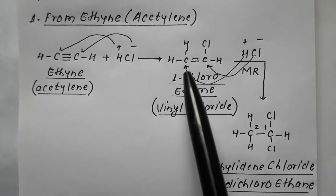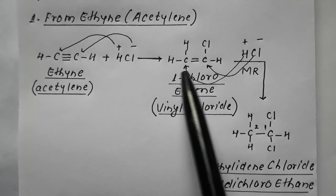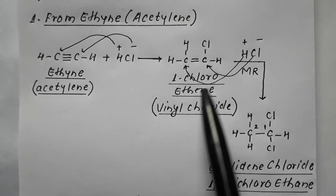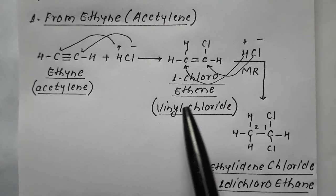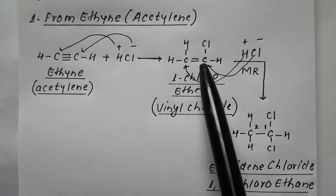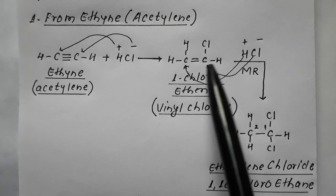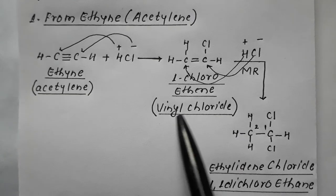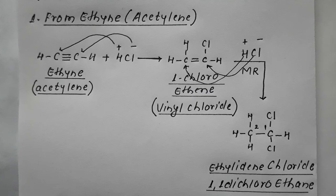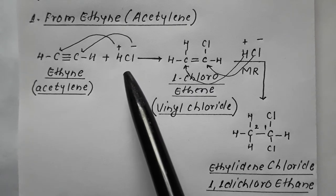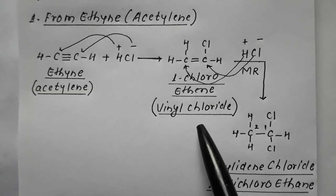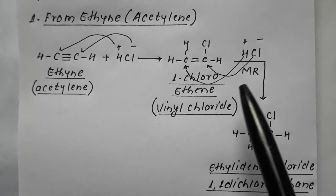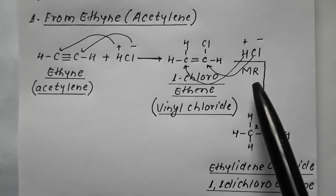Suppose H attaches to one carbon and Cl attaches to the other carbon, resulting in formation of CH₂=CHCl — that is 1-chloroethene, also known as vinyl chloride. So acetylene reacting with HCl in normal amount results in formation of vinyl chloride.